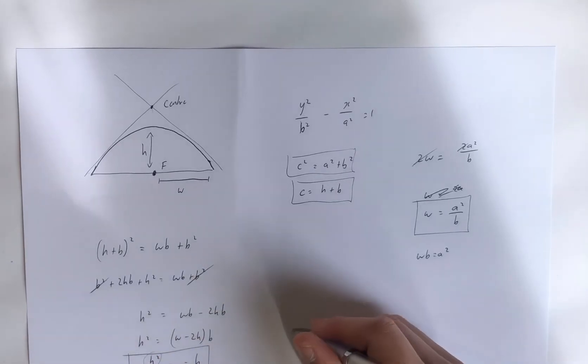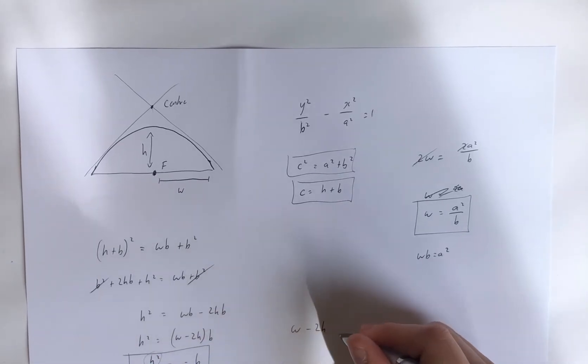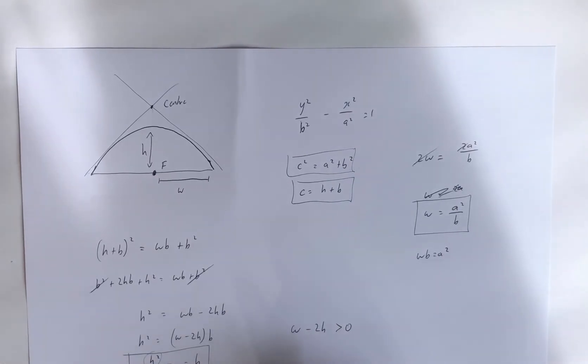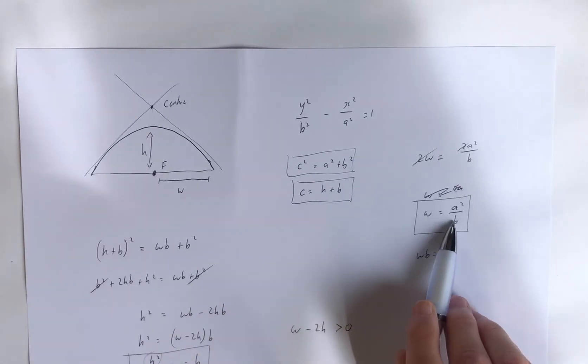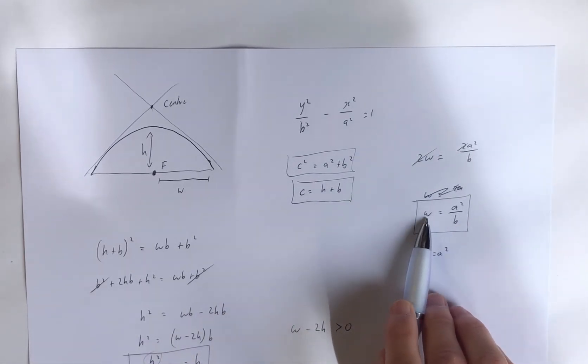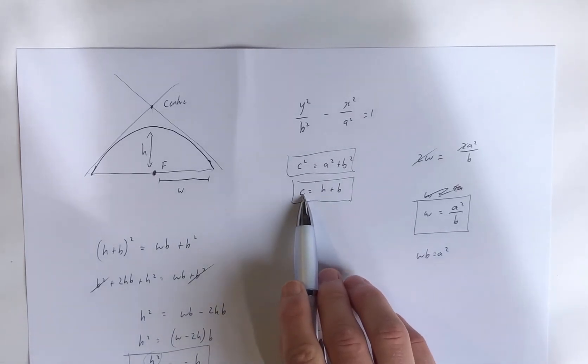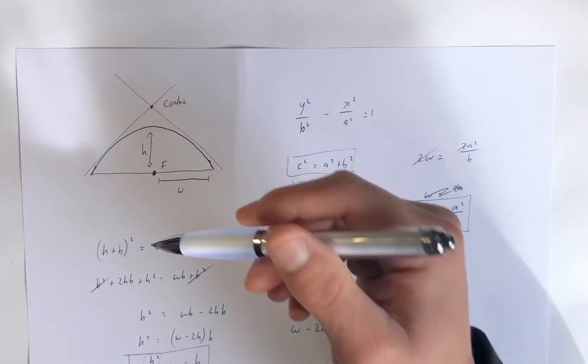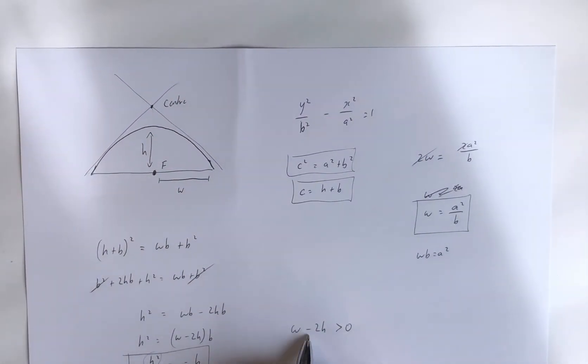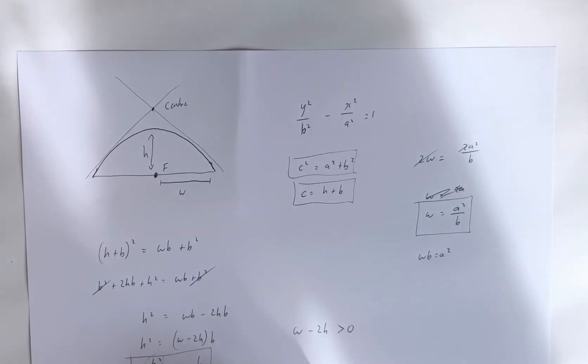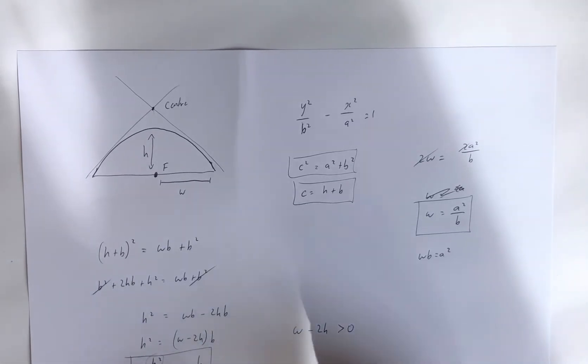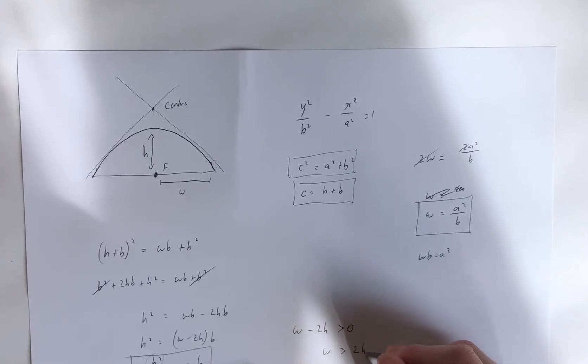Now, w has to be greater than zero, or w has to be greater than 2h. And remember earlier I said is half the width greater than two times the height?